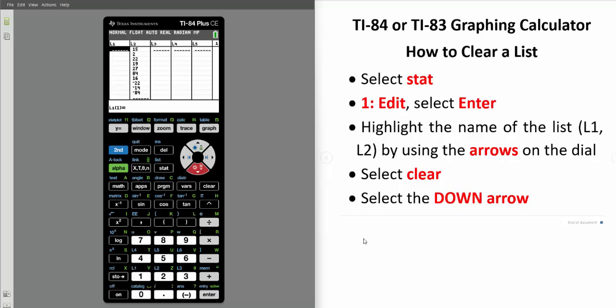So let's try to clear the data from List 2. Use the arrow keys to highlight the name of the list. Select the Clear button and then select the down arrow button. And once again, the data has been cleared from that list.